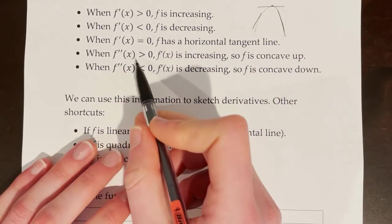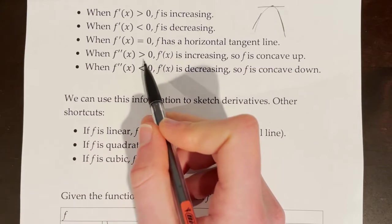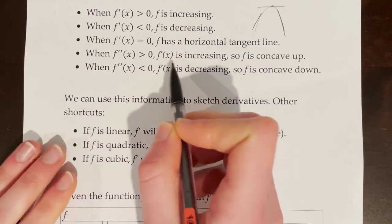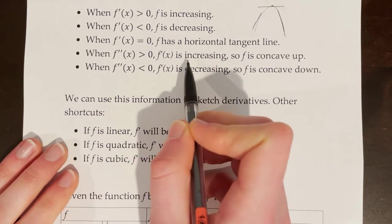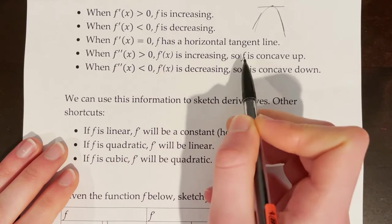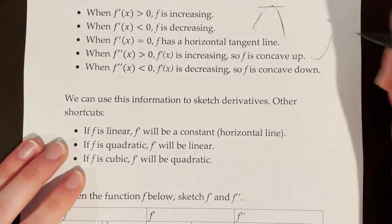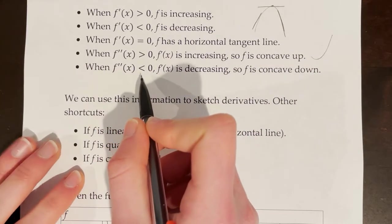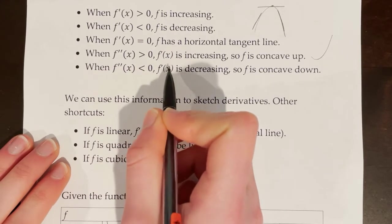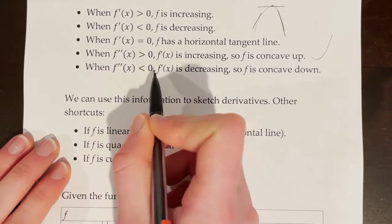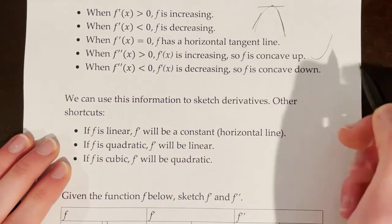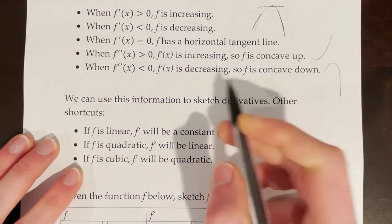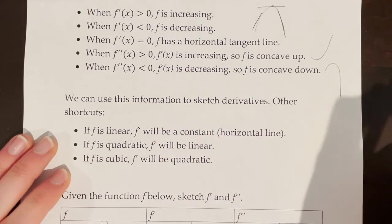When f double prime of x, the second derivative, is greater than 0, f prime of x is increasing — the slopes of the tangent lines are increasing — so f is concave up. When f double prime of x, the second derivative, is less than 0, f prime of x, the first derivative, is decreasing, so f is concave down. The slopes of the tangent lines are decreasing.